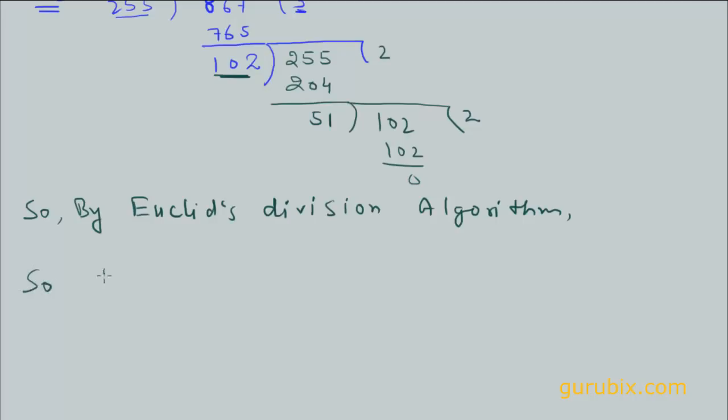So our HCF of 255 and 867 is 51, because the divisor at this stage is 51. That's why we get the HCF of these two numbers. Thank you.